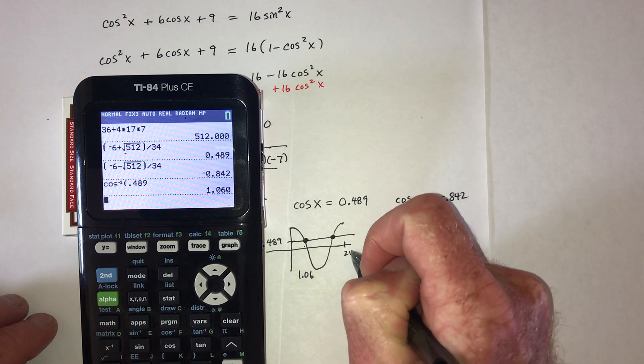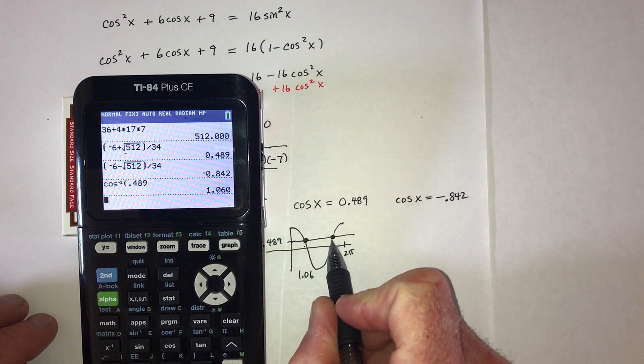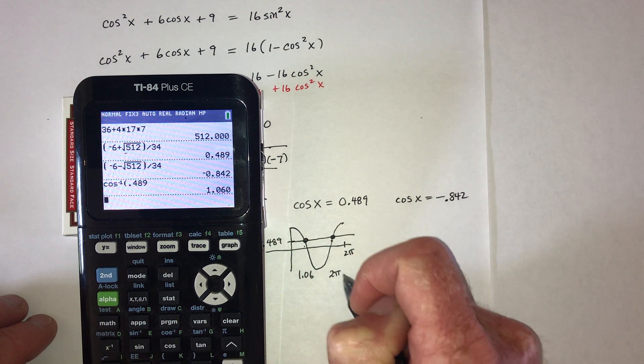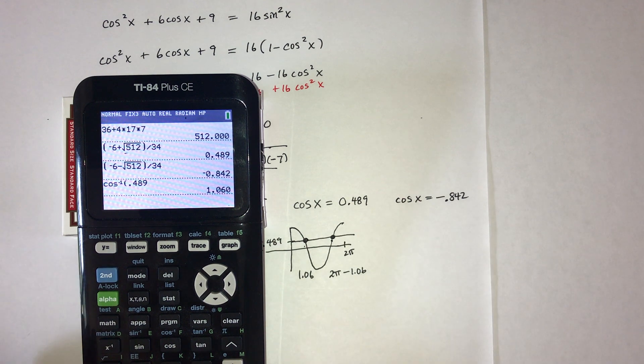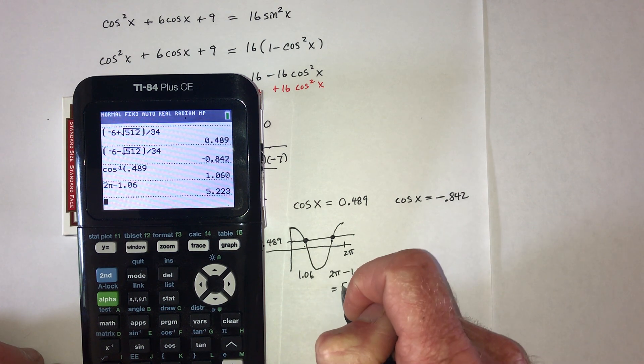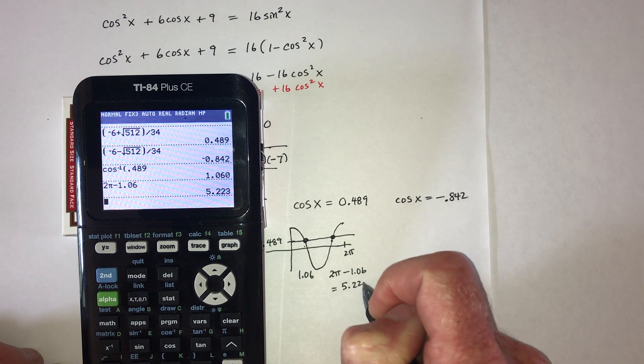Since 2 pi is right here, this one is to the left of 2 pi. So that would be 2 pi minus 1.06. Or in other words, 5.223.